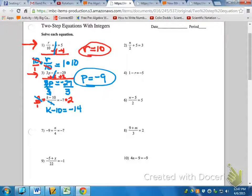Now we're down to the step where we need to get K alone, and it says K minus 10, so what will we do? Add 10.